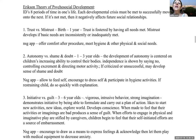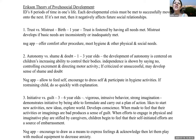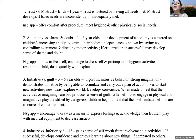Erikson developed a theory of psychosocial development with eight periods of time in one's life. Each developmental crisis must be met to successfully move on to the next; if not met, it negatively affects future social relationships. We'll cover only the first five, as the last three pertain to adults. First, trust versus mistrust: birth through about one year — trust is fostered by having all needs met; mistrust develops if basic needs are inconsistently or inadequately met. As a nurse, offer comfort after a procedure and meet hygiene and other physical and social needs.